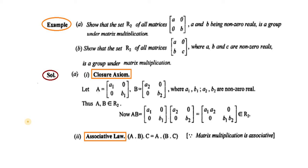Bismillahirrahmanirrahim. These students, here we have an example with part A and part B. In part A, we have R2. Show that the set R2 of all matrices A, 0, 0, B, where A and B being non-zero reals, is a group under matrix multiplication.